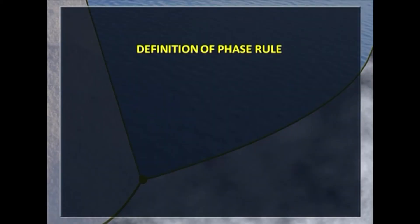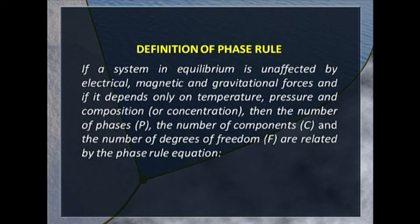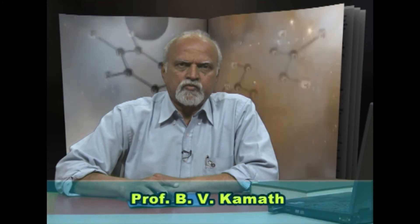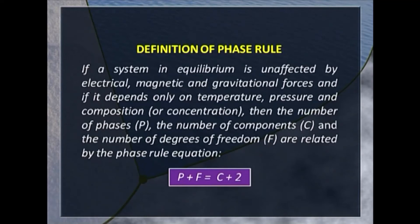Let me first define the phase rule. If a system in equilibrium is unaffected by electrical, magnetic and gravitational forces, and if it depends only on temperature, pressure and composition or concentration, then the number of phases P, the number of components C and number of degrees of freedom F are related by the phase rule equation: P plus F is equal to C plus 2. We deal with only normal systems in chemistry — systems not affected by electric, magnetic and gravitational forces — and therefore the phase rule equation stands: P plus F equals C plus 2.